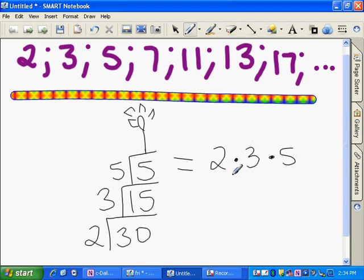Now you always want to write your prime factorization from smallest to largest and you want to use exponents if needed. And there's no duplicate numbers here, so I'm not going to use any exponents. And a way to check yourself is to actually multiply them. Two times three is six. Six times five is 30. So I know I'm right because I started with a 30 down here.